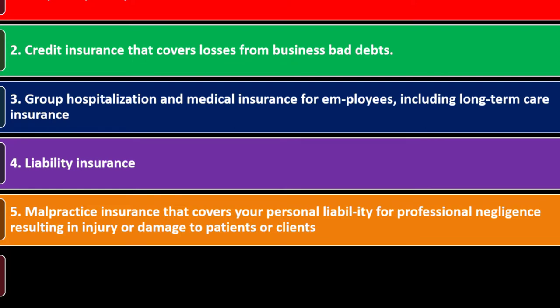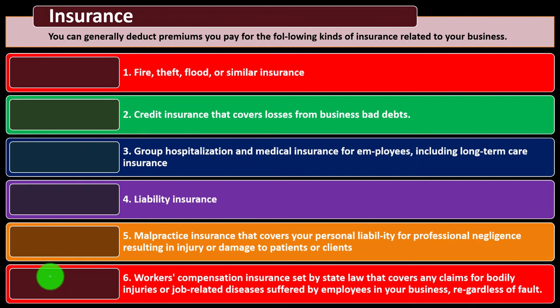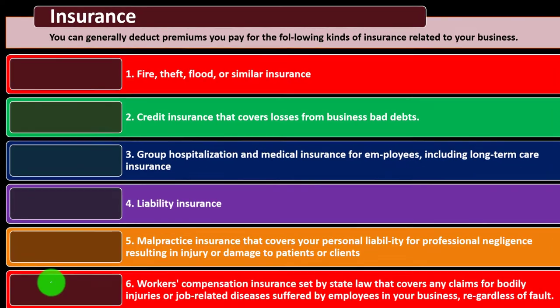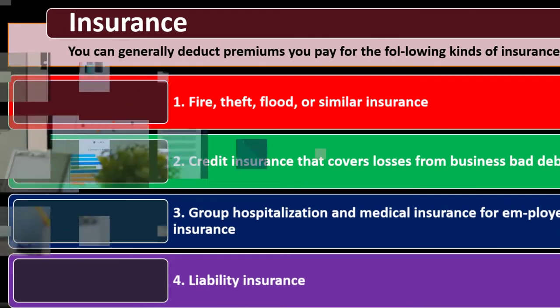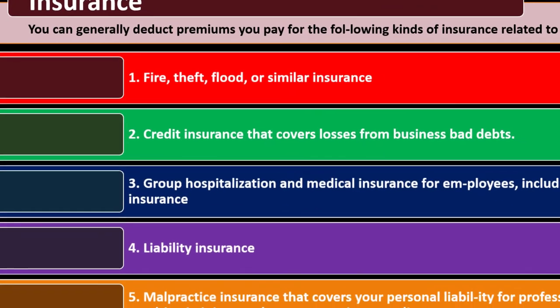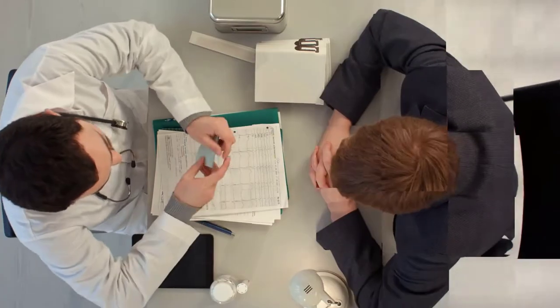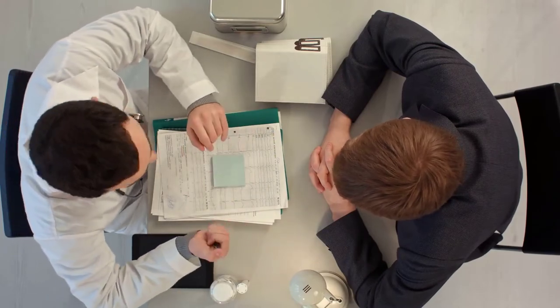Number 5: malpractice insurance that covers your personal liability for professional negligence resulting in injury or damage to patients or clients. Number 6: workers' compensation insurance set by state law that covers any claims for bodily injury or job-related diseases suffered by employees in your business regardless of fault. Which ones are most applicable will depend on your particular business and what kind of insurance you need.